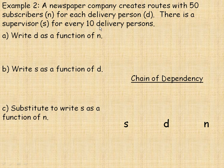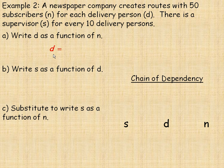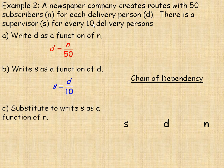In the last example, a newspaper company creates routes with 50 subscribers per delivery person. Here n is the number of subscribers and d is the number of delivery persons, with one supervisor for every 10 delivery persons. In part a, d as a function of n is d equals n over 50. For example, 2,000 subscribers divided by 50 gives 40 delivery people. In part b, s as a function of d is s equals d over 10, so 40 delivery people divided by 10 gives 4 supervisors.